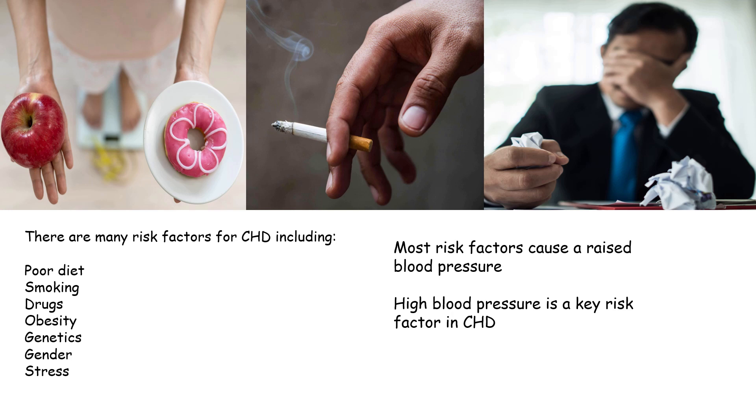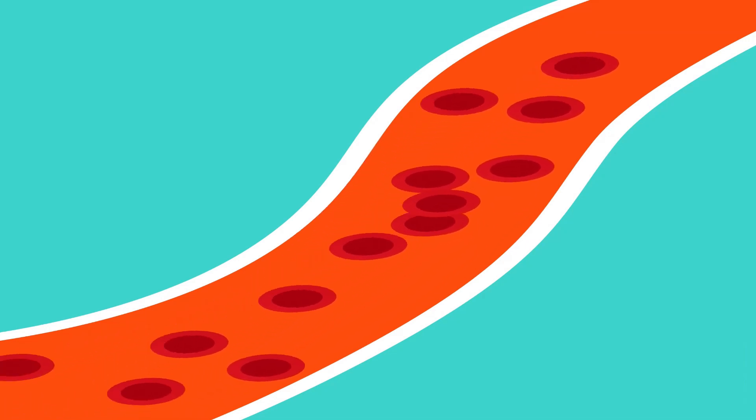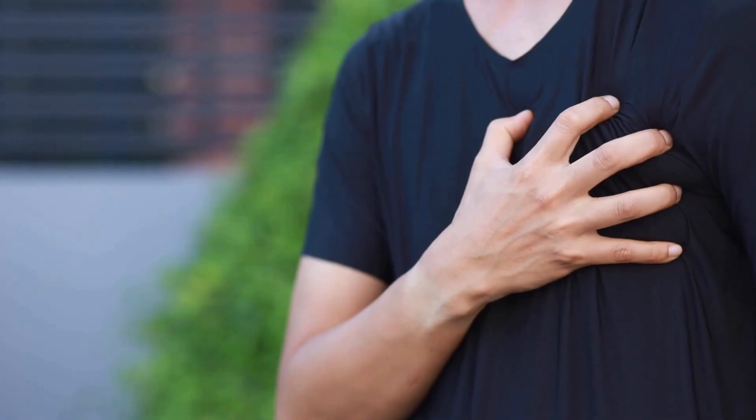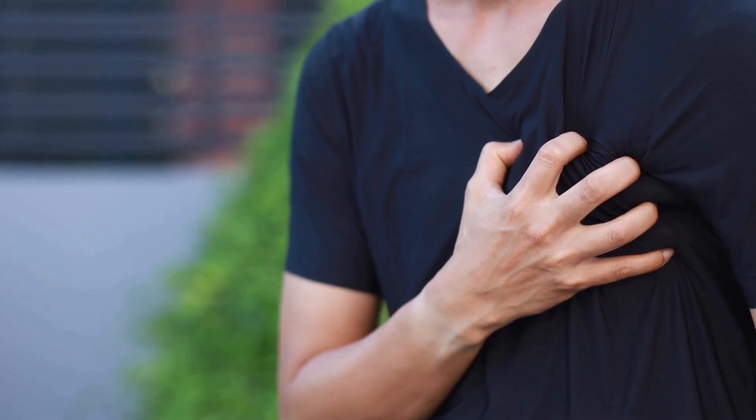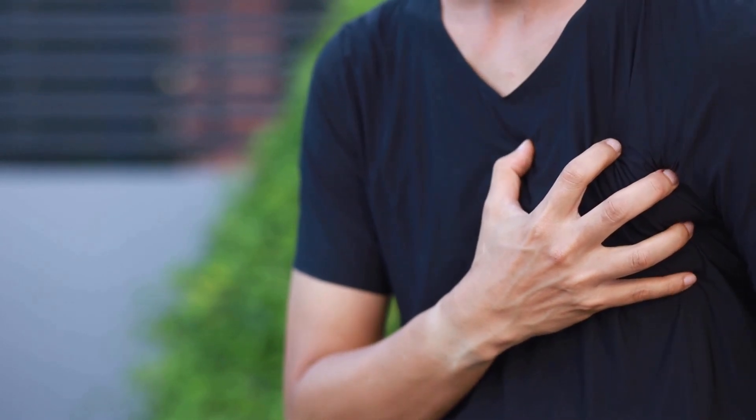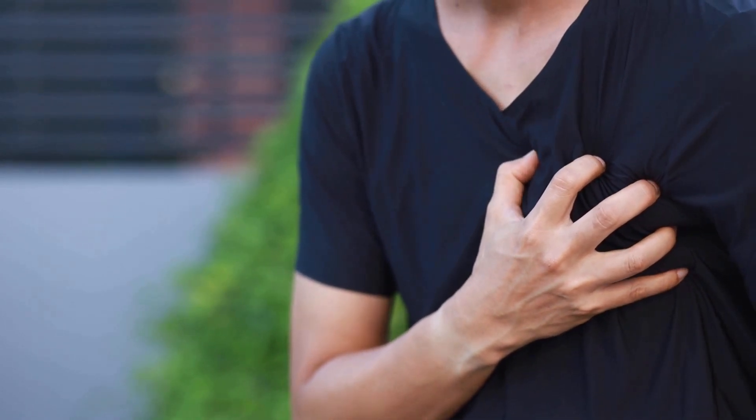Most of these risk factors cause a raised blood pressure. High blood pressure damages the inside walls of the coronary artery. This leads to fatty layers or fatty deposits building up and reducing the blood flow to the heart, as you can see here. Reduced blood flow means less oxygen to heart muscle, less energy for muscle contraction. Heart cells die. This is called a heart attack.